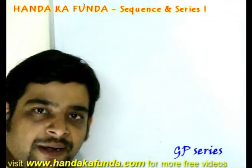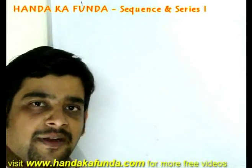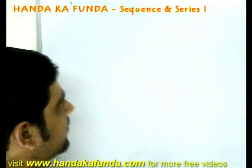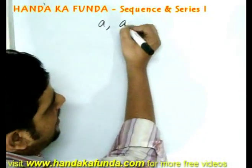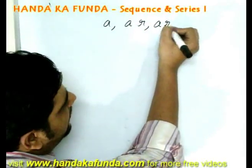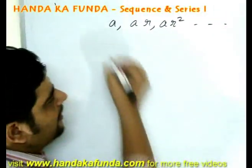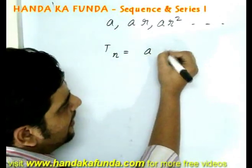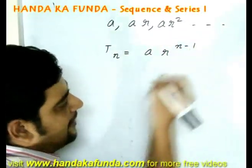In case of a geometric progression, the ratio of two consecutive terms remains constant. That is, let's say the terms are a, ar, ar square, and so on. In this case, the nth term is given by a r to the power n minus 1.